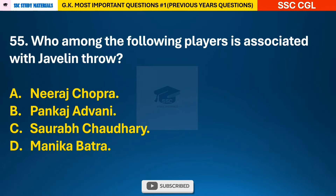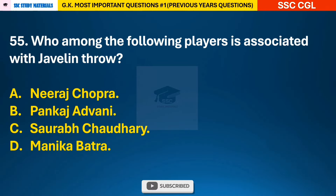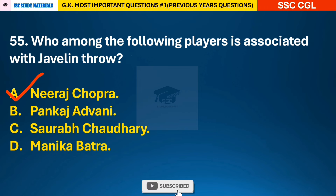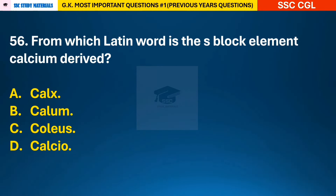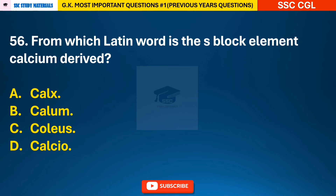Question 55: Who among the following players is associated with javelin throw? Question 56: From which Latin word is the s-block element calcium derived? — answer A: calx.